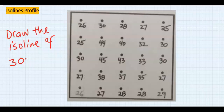You can start from any point. Let me start with this 30 point. Next, I will consider this is 25 and this is 44, so from 25 going to 44 I will encounter 30 here. Next, this is 30.